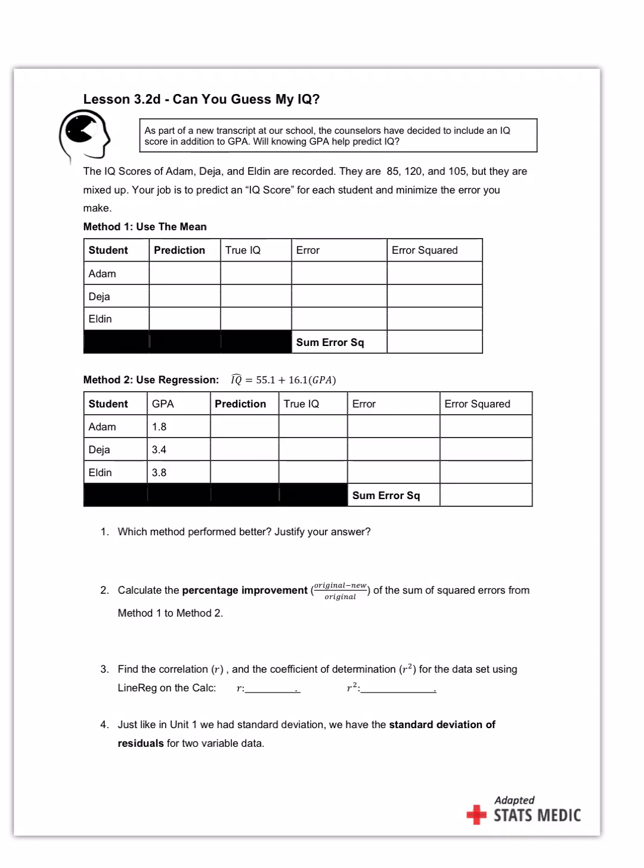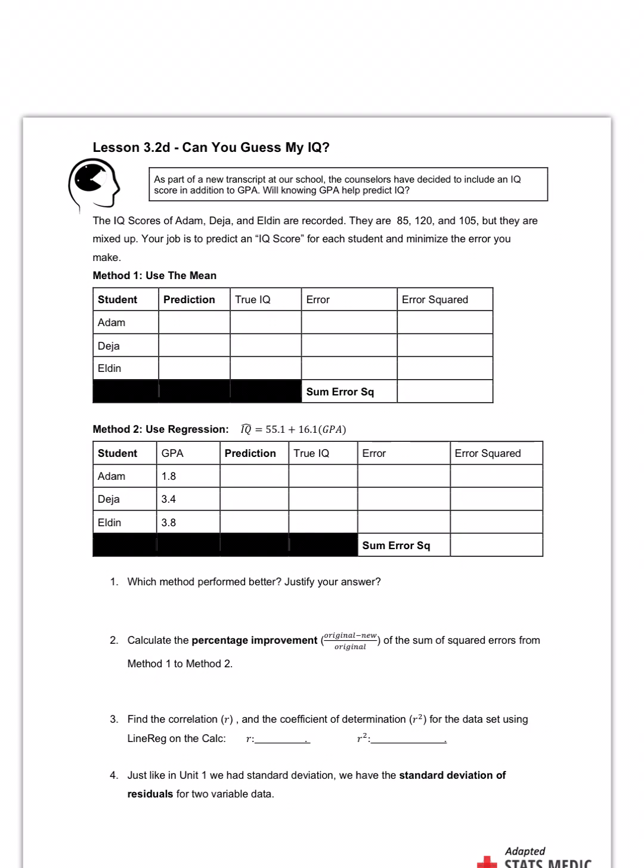This is about how to interpret statistical concepts. Here's the scenario: as part of the new transcript at our school, the counselors have decided to include IQ score in addition to GPA. Will knowing your GPA help predict the IQ? That's what we want to know. The IQ scores of Adam, Deja, and Eldon are recorded as 85, 120, and 105, but they are mixed up. We don't know whose goes with who.